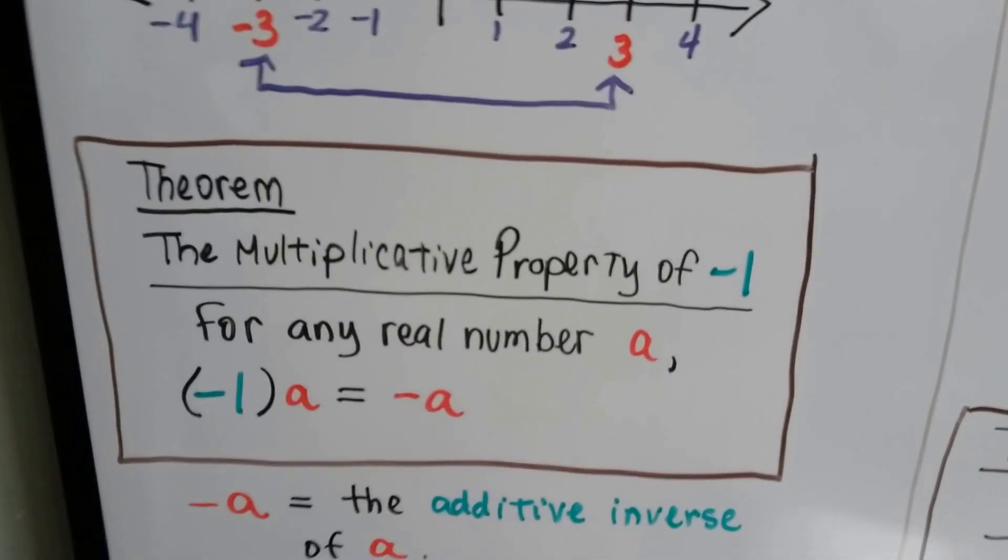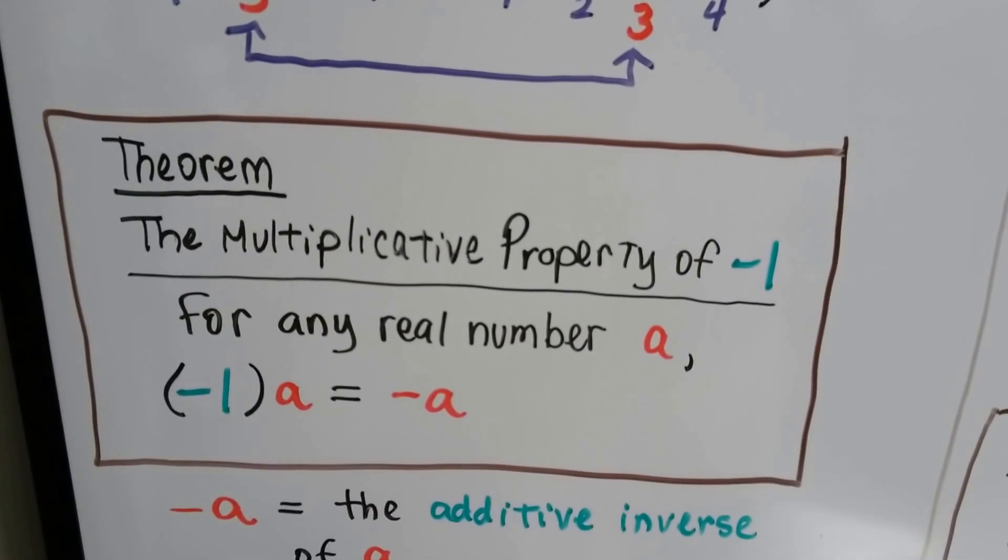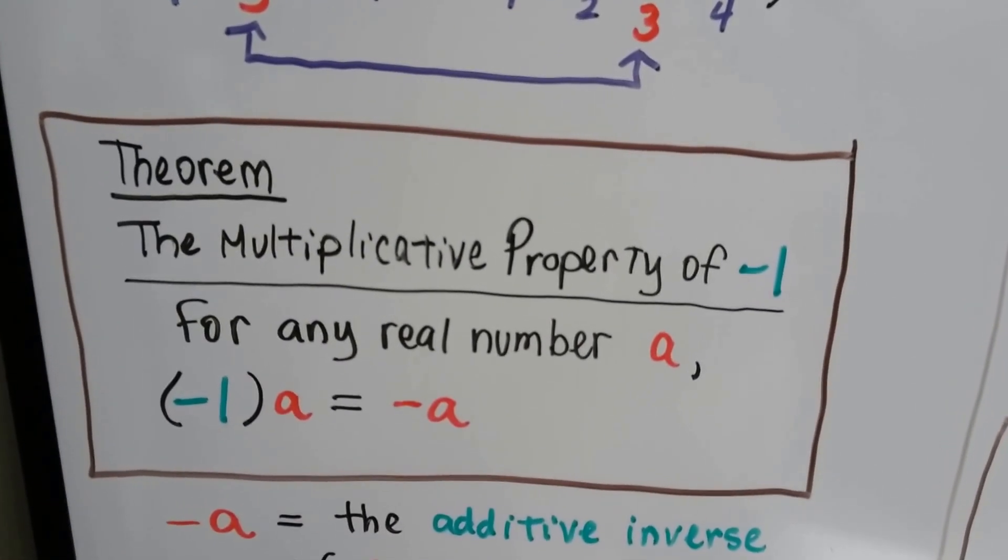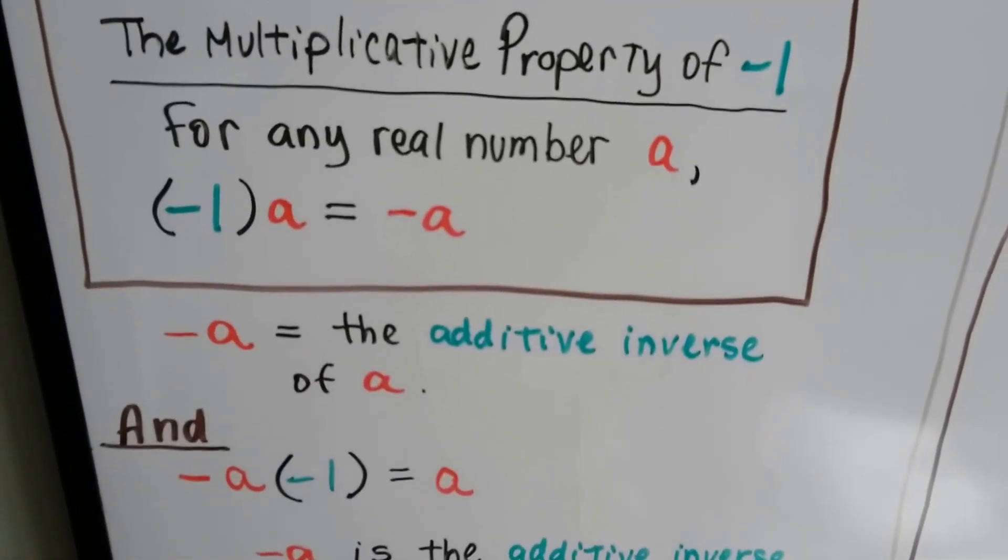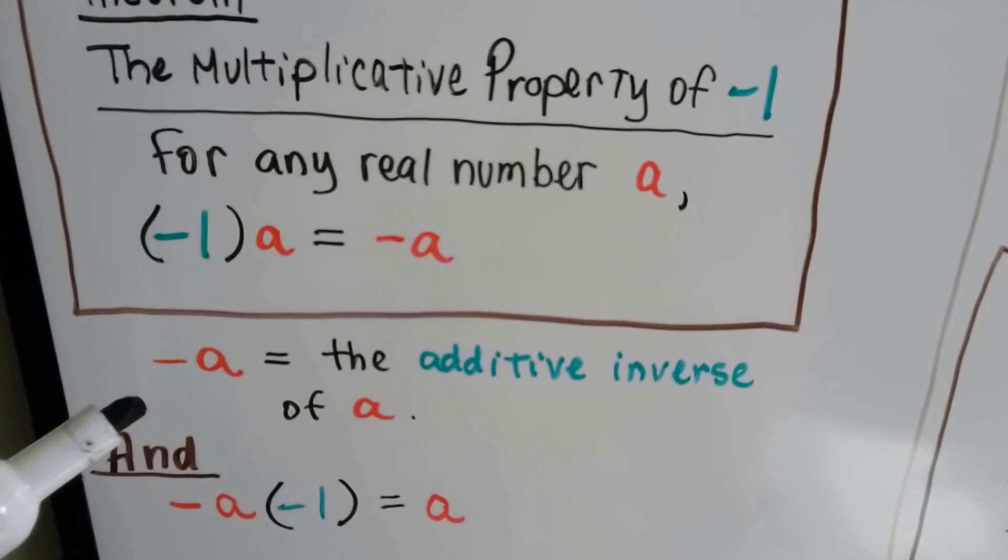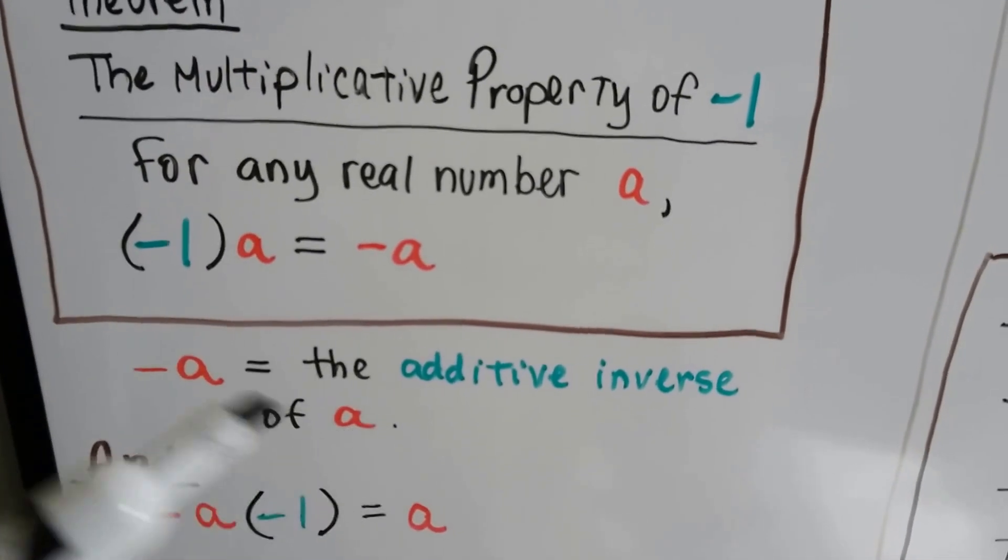So here's the theorem. The multiplicative property of negative 1 says for any real number a, negative 1 times a is negative a. And negative a is the additive inverse of a. They're the opposites.